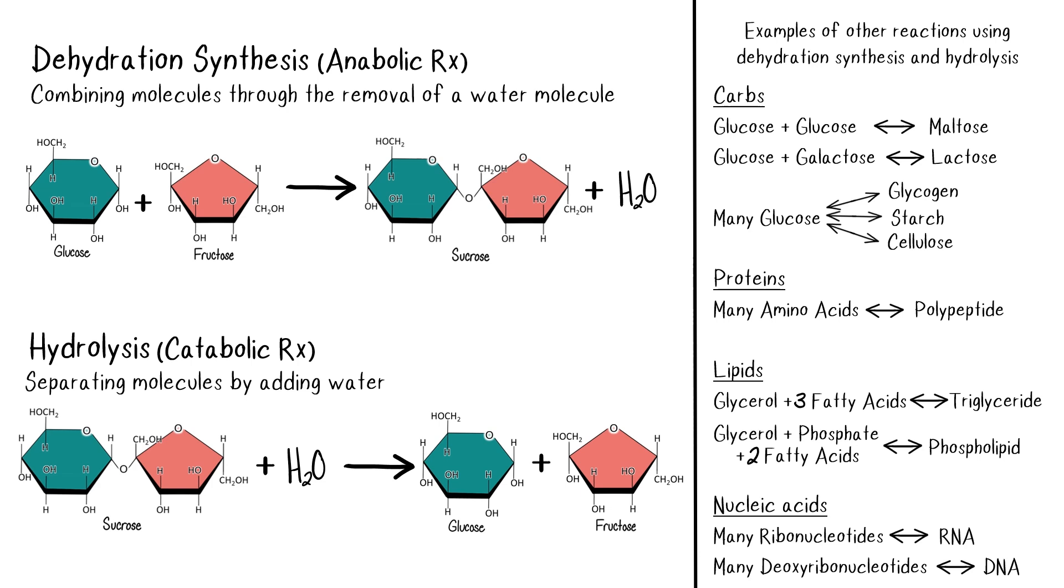to make or break larger molecules, this process needs to be repeated. So to make maltose, which is only two glucose molecules connected together, that only takes one round of a dehydration synthesis reaction. But to create a complex carbohydrate like glycogen, which is over 100,000 glucose molecules connected together, the reaction needs to be repeated over 100,000 times as each subsequent glucose is added to the growing chain.